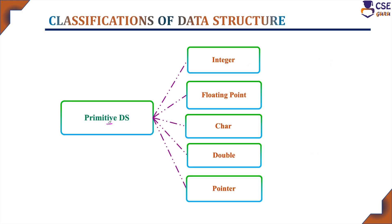The different categories of primitive data structures are integer, floating point, char, double, pointer, etc. Integer, if you consider, stores whole number values — for example, 10, 20. It will store only whole number values and occupies two bytes of memory location.